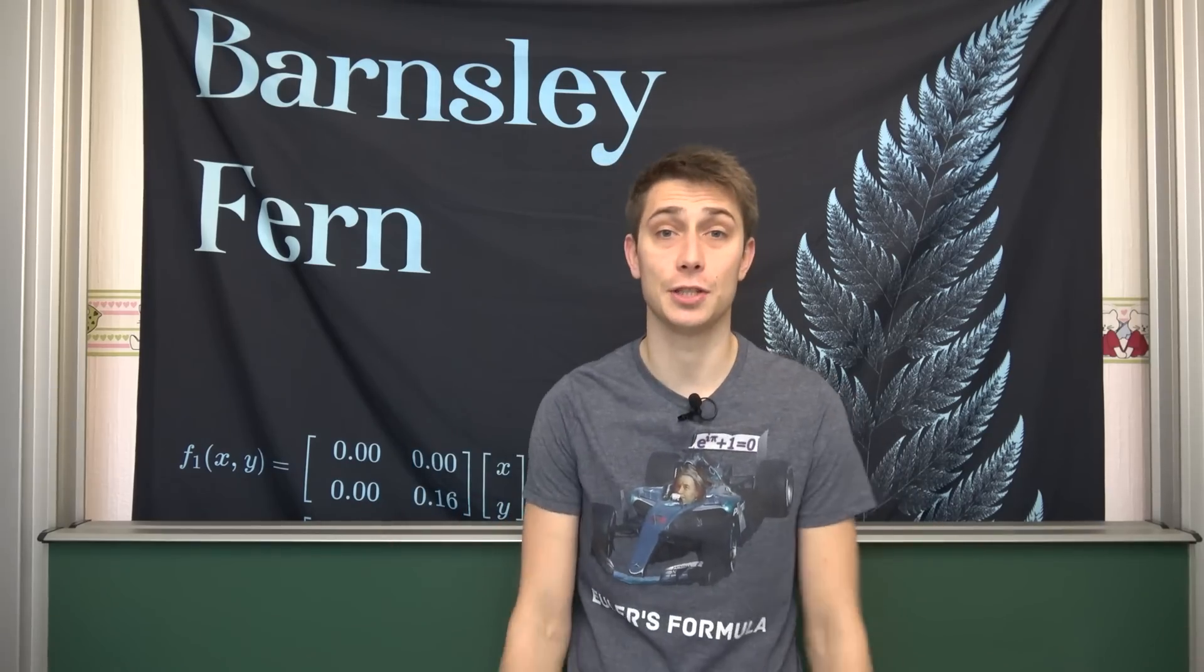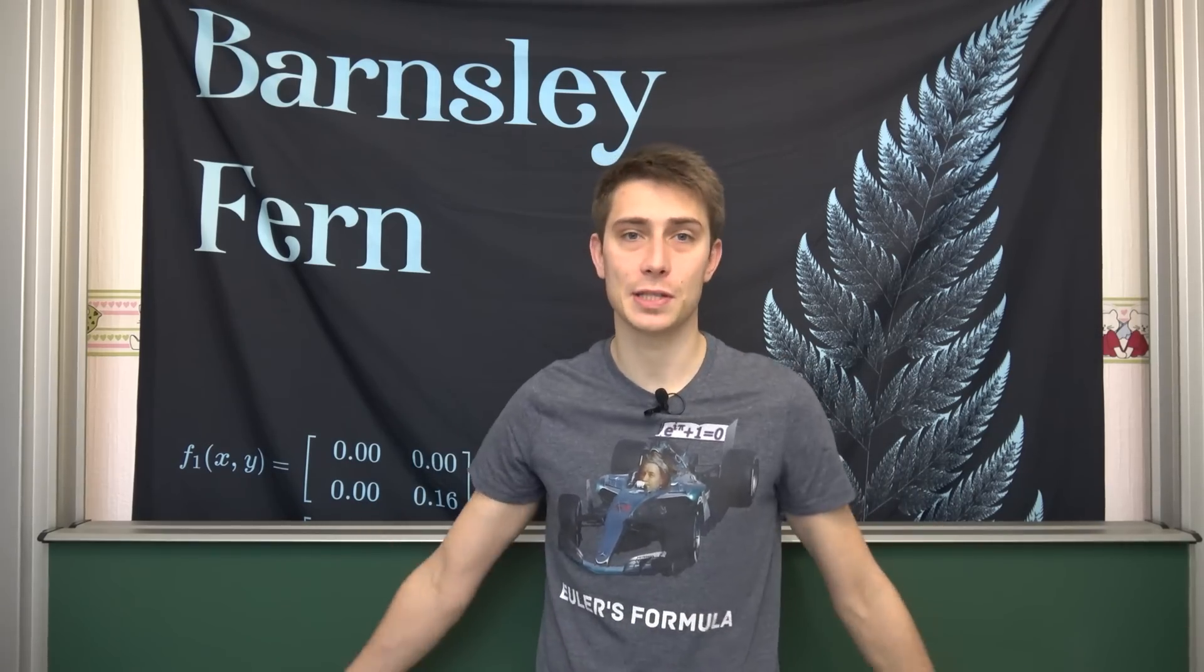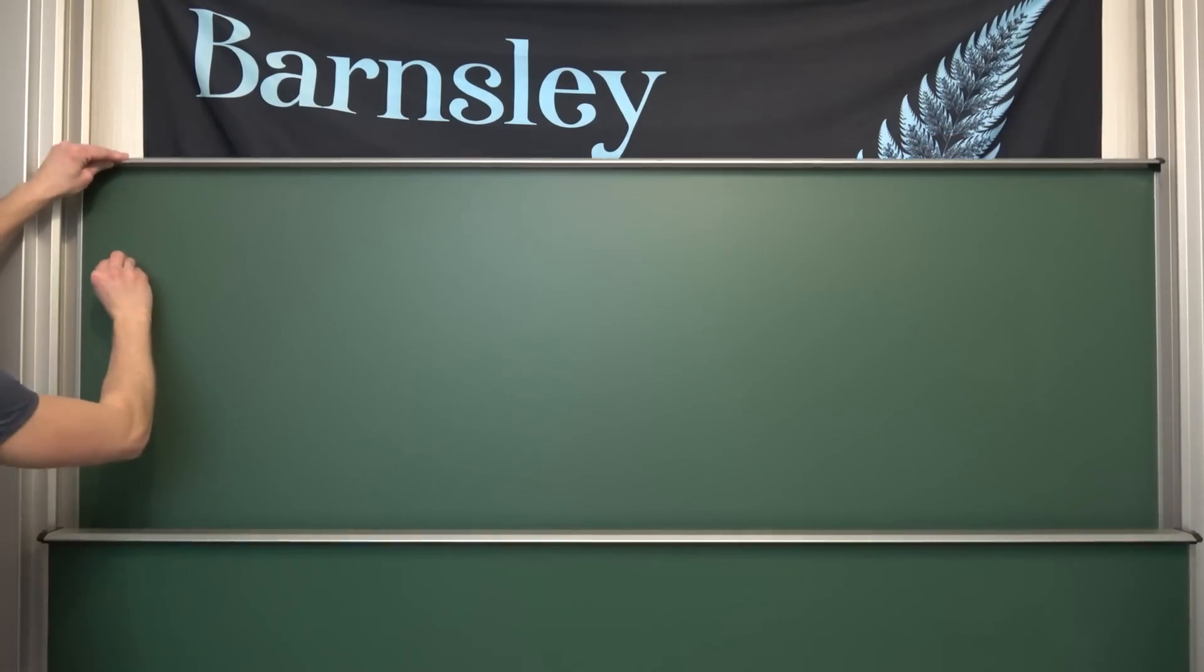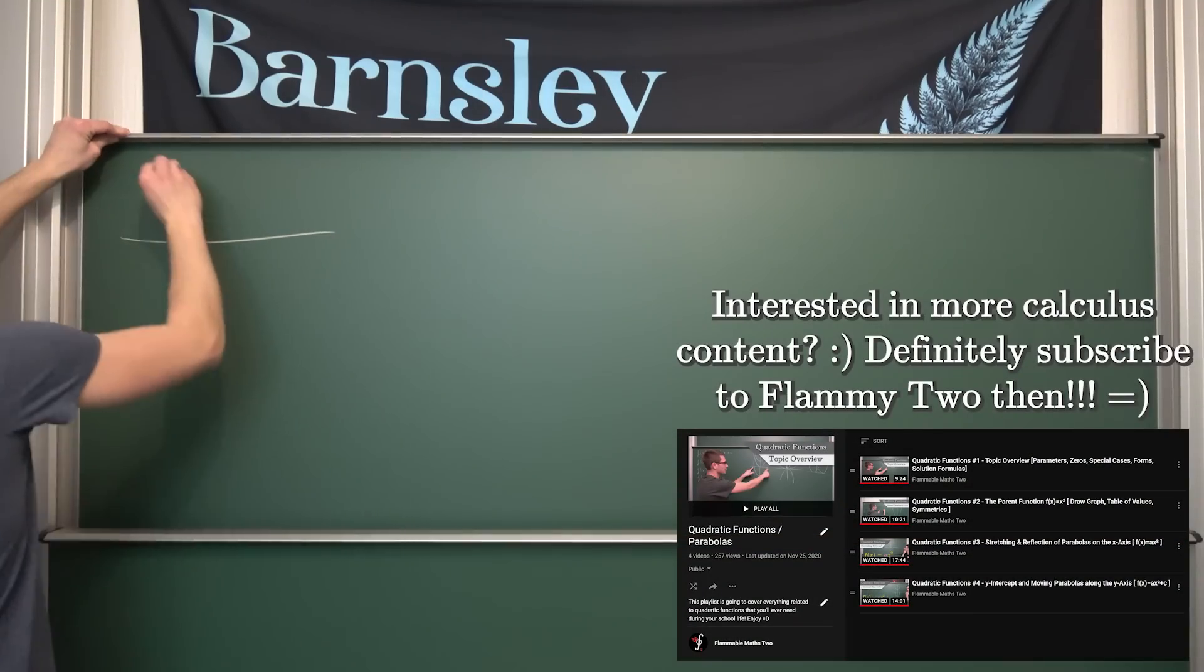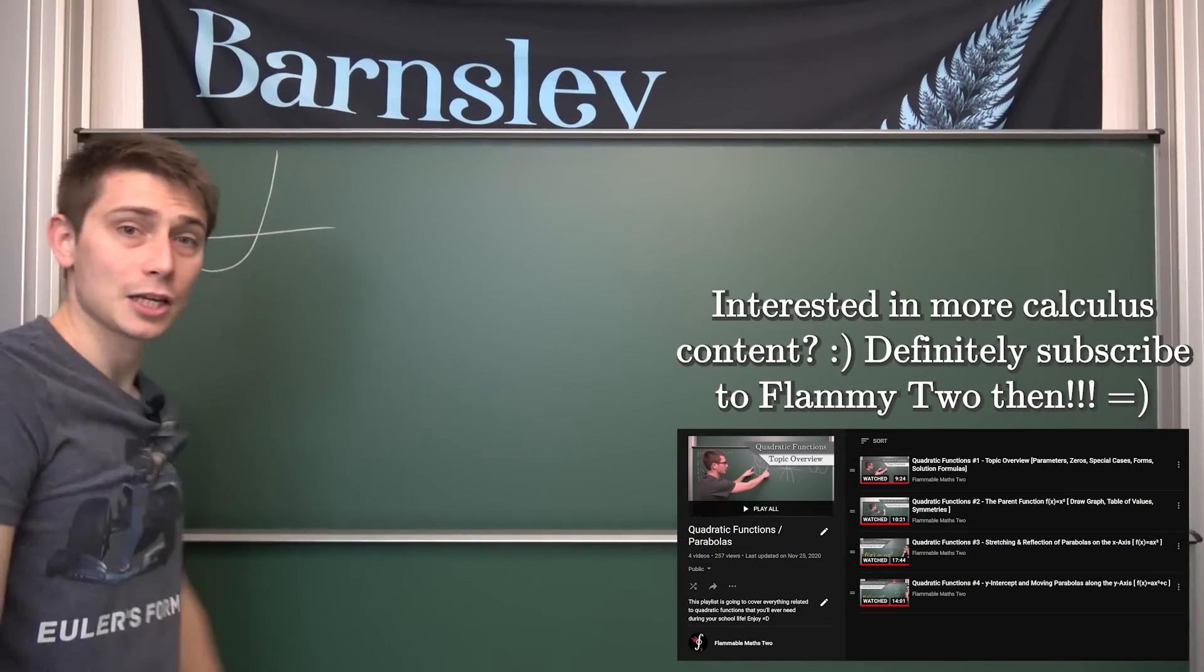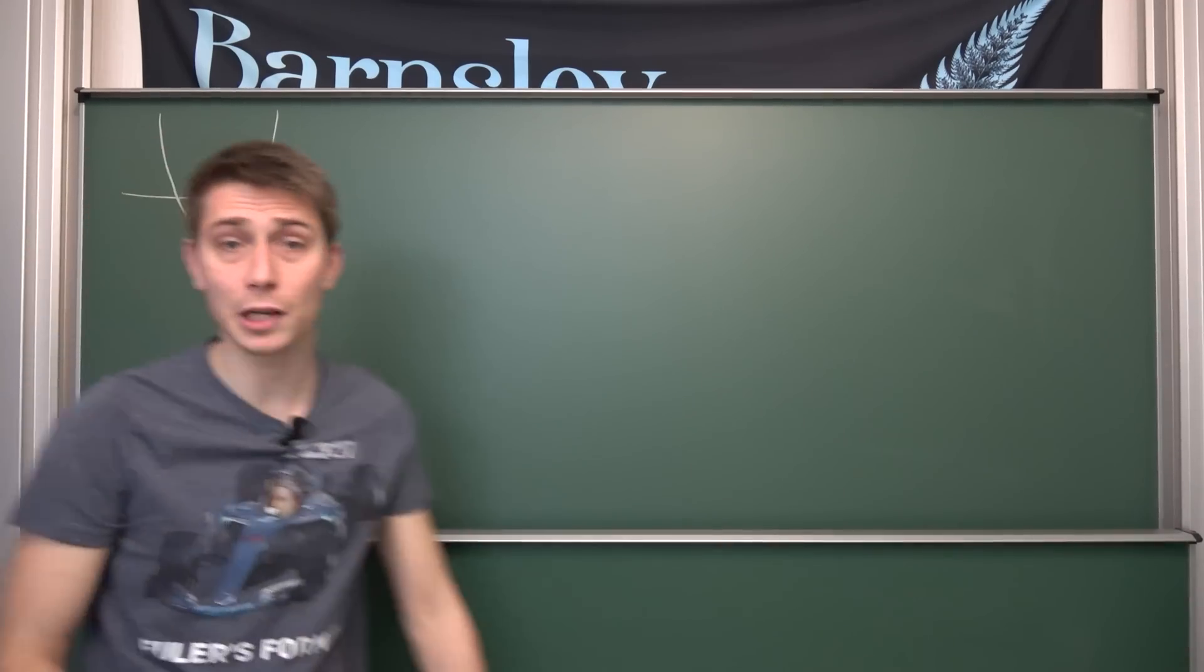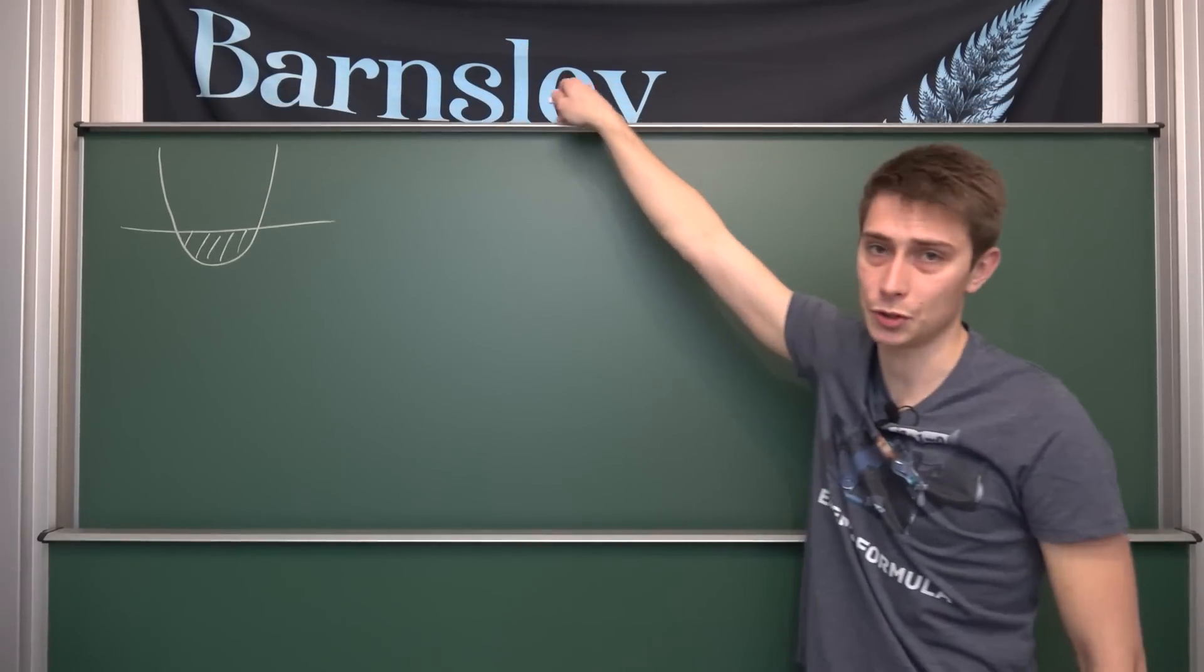Gotta start nice and chill into the new year with a very simple little analysis problem, calculus problem I found over on Twitter. Let's imagine we have an x-axis and through this x-axis runs a nice parabola. We want to find out what the shaded area is between the x-axis and this parabola. This is what we're going to do today.